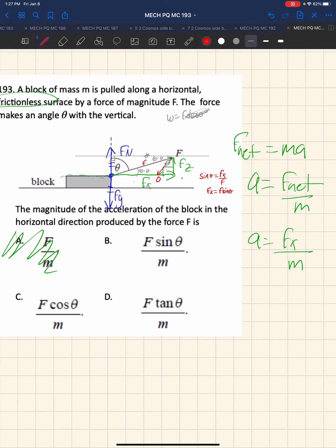Going back to my original work, Fx, then a is Fx is F sine theta over m, and we can see then that that is choice B.